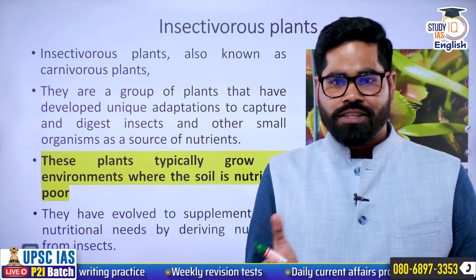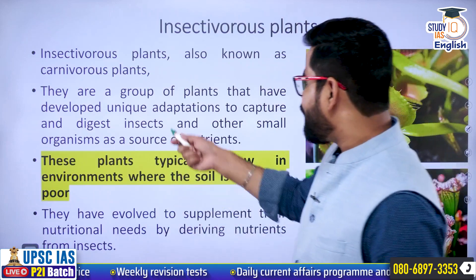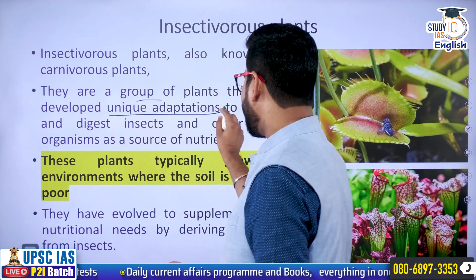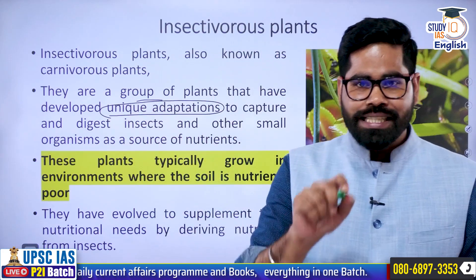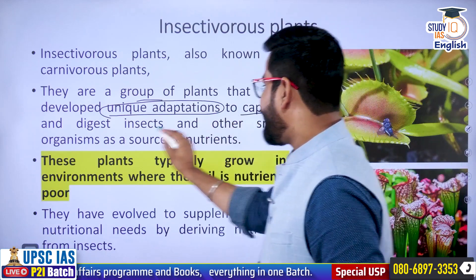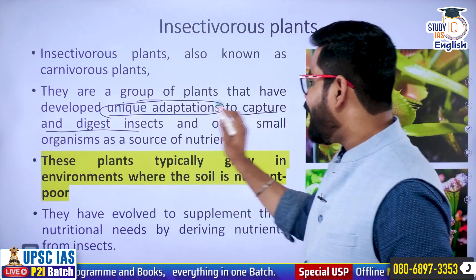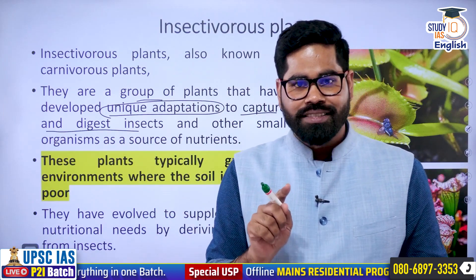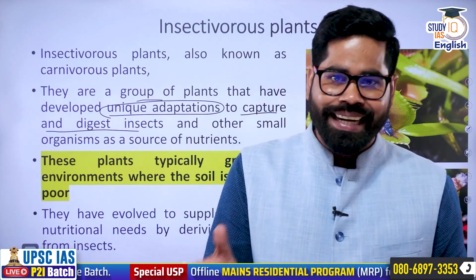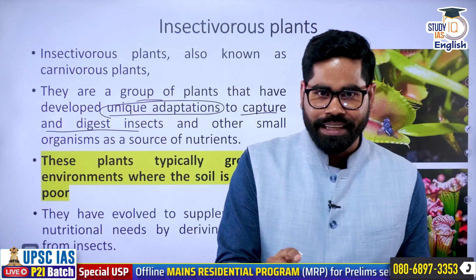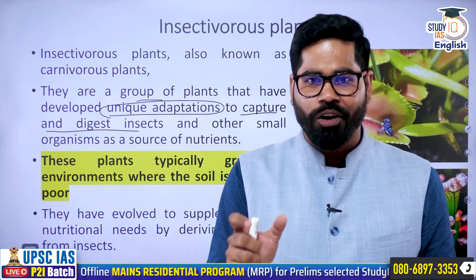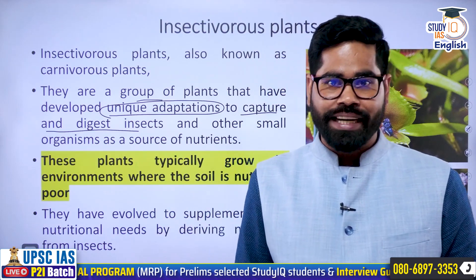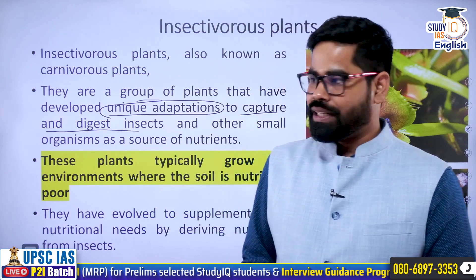Basically, insectivorous plants, which are also known as carnivorous plants, are a group of plants that have developed a unique adaptation. They can capture and digest insects and other small organisms as a source of nutrients. They have got a special adaptation helping them to catch insects or small organisms in order to meet their nutritional requirement.